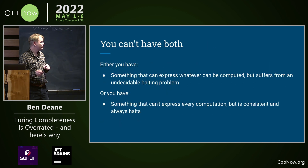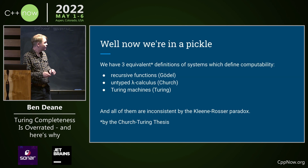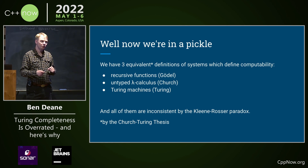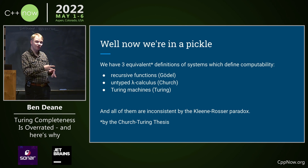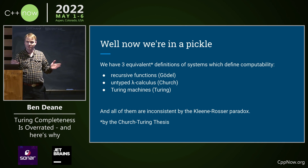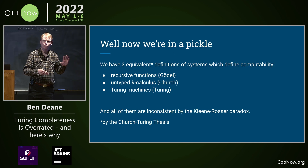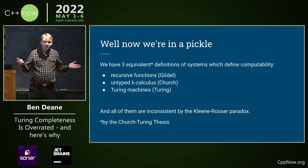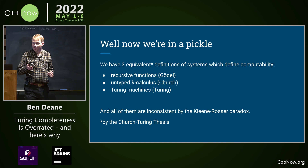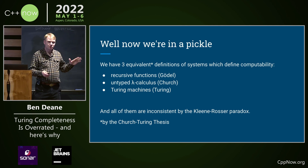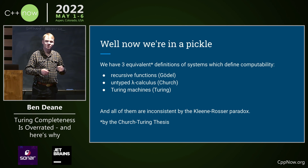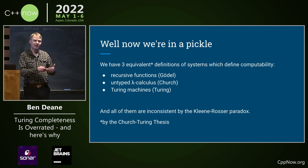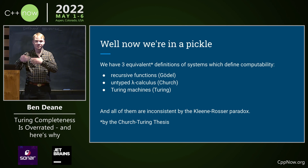Then in 1936 comes another bombshell: Turing and Church prove that recursive functions from Gödel, the untyped lambda calculus, and Turing machines are all equivalent models of computation — though it took them a while to convince Gödel. And therefore they're all inconsistent. So we've got a problem here, and the problem is similar to the Russell paradox.